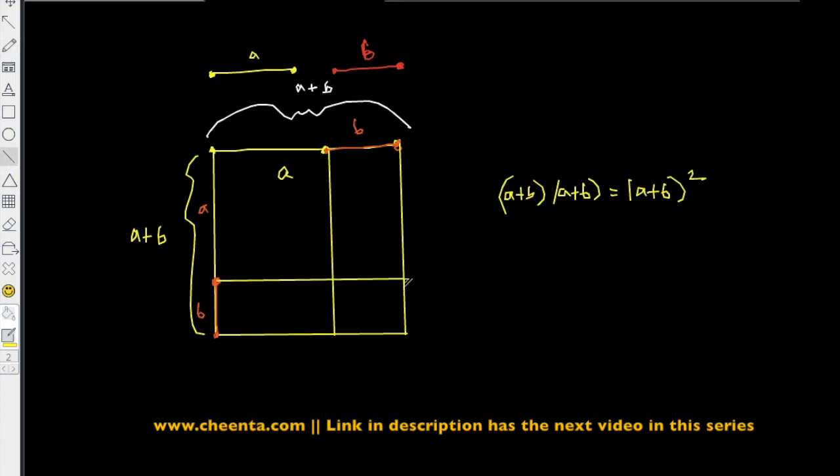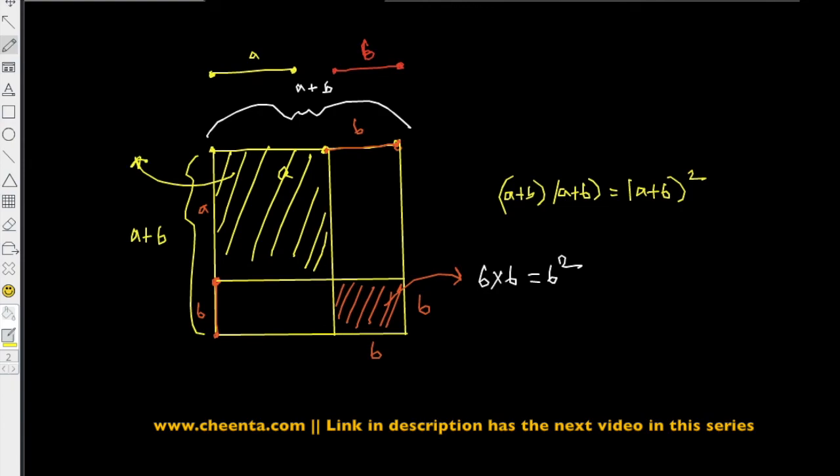Now it's quite easy to see what's going on. This part, this length is b, this length is b, so this is a square, so area of this square is b times b which is b². The same goes with the top left square, so this is a times a, that's a².